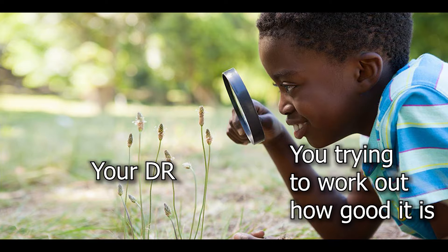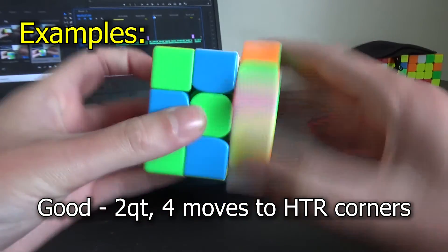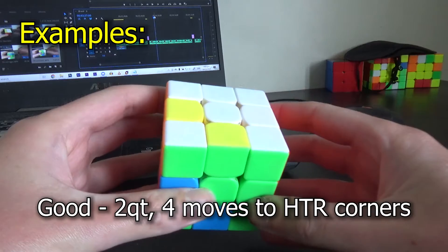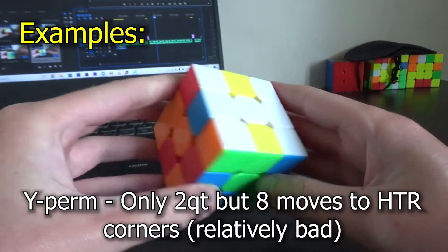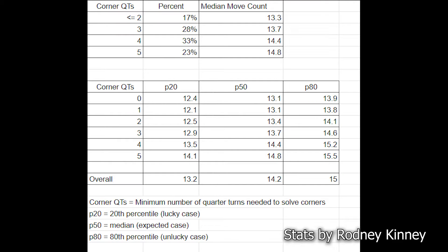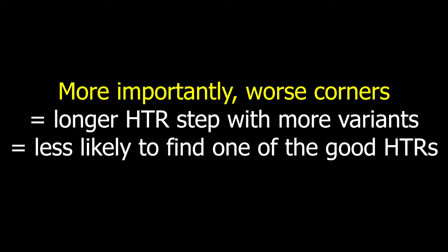So to get a good HTR you really need a good DR, and how you can tell a DR is good is by the corners. Basically, the fewer quarter turns in the corner solution and the fewer turns overall, the better the DR. This is because the more quarter turns you need, the longer both the HTR solution and the entire finish are on average. Plus the longer the HTR and optimal finish are, the less likely you are to find optimal or close to it.